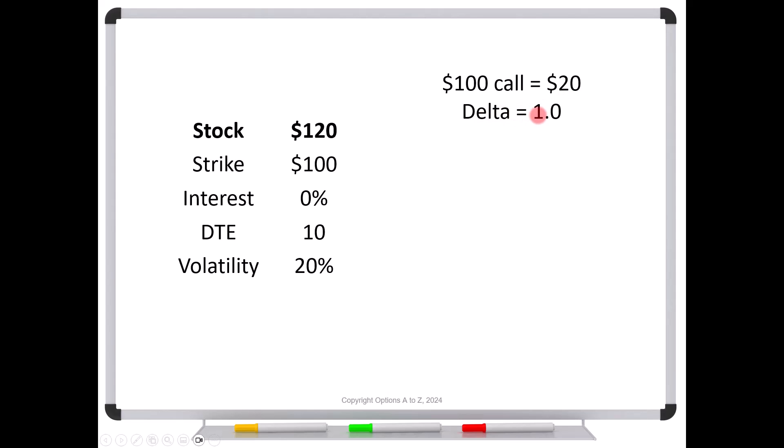Now remember, parity means equivalence. It means that the call is equivalent to stock. And another way we can find that out is that if you paid 20 for this call, and then exercised it and paid 100, you would pay a total of 120, which is exactly the price of the stock. There's no premium over and above the stock. So that's a very simple way to find out that this call really isn't even an option anymore. It's stock. And that's why it has a delta of one.